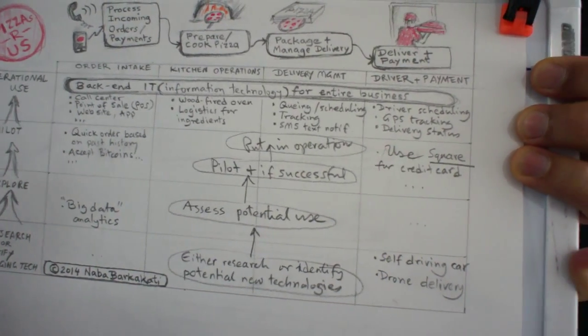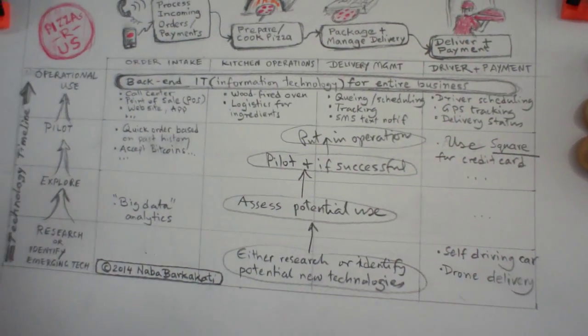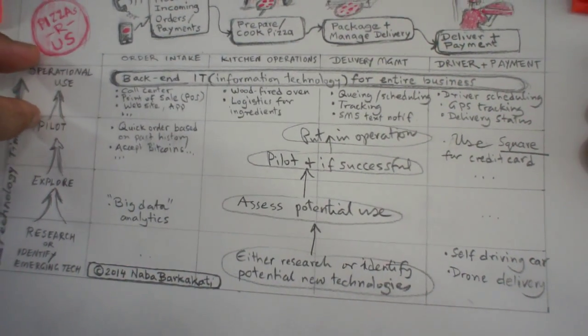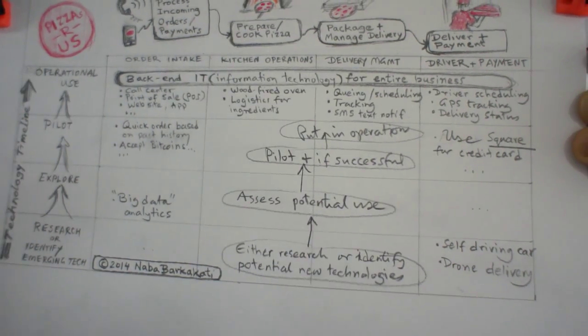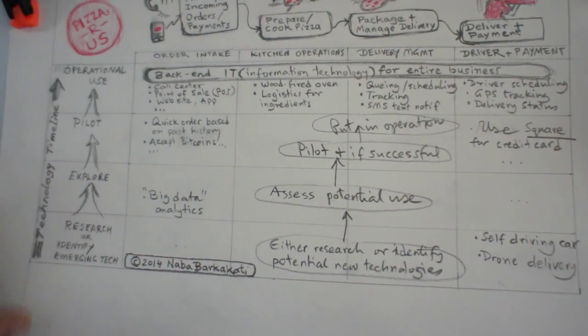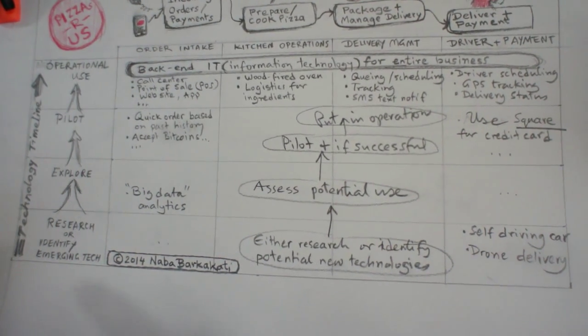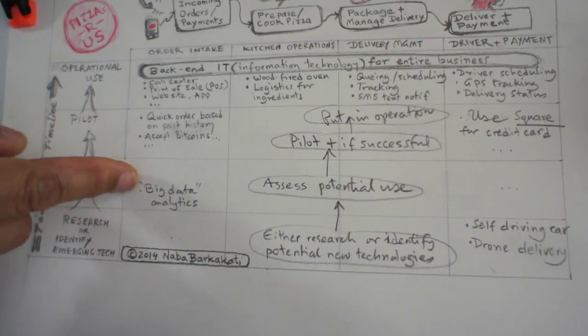Now, after you have done that, I would suggest that you also create a timeline in this manner here, where the top line is the operational use, the current state of the technologies. And then below comes your emerging technologies that you're identifying, exploring their use in the future.